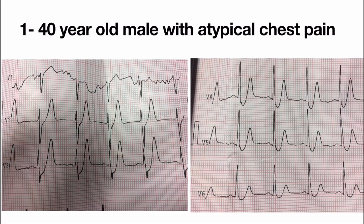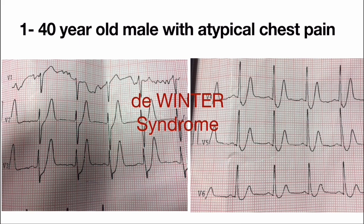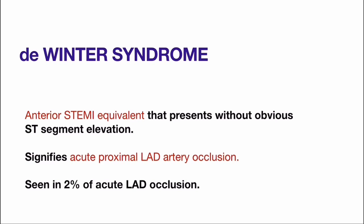The first ECG is from a 40-year-old male with atypical chest pain presenting to the emergency department. If you are not aware of this pattern, you may miss a major coronary occlusion. This pattern is called the De Winter pattern, also known as De Winter syndrome, and it indicates proximal LAD occlusion. De Winter syndrome indicates an anterior STEMI equivalent and signifies acute proximal LAD occlusion. It is seen in approximately 2% of acute LAD occlusions.